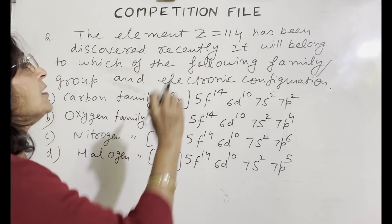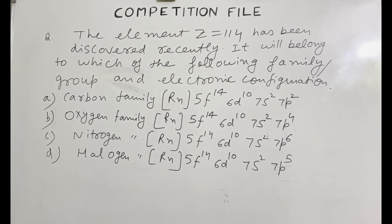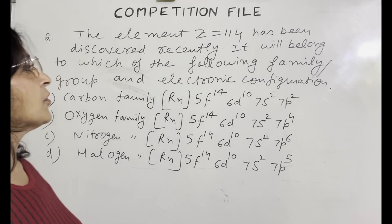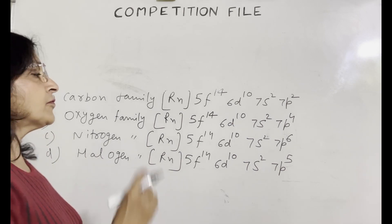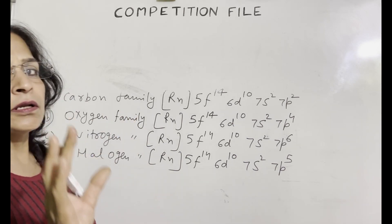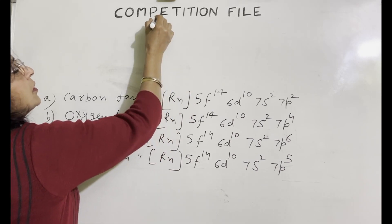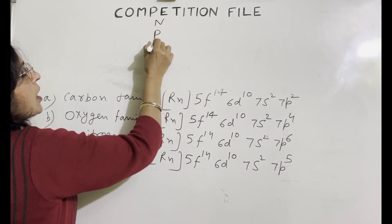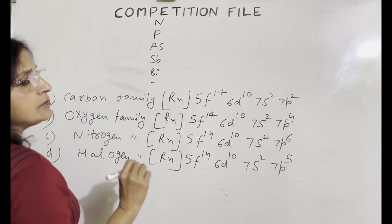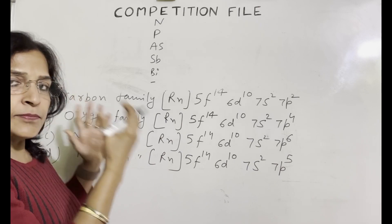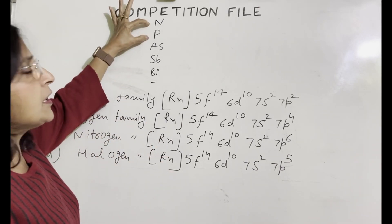Next question is the element Z equals 114 has been discovered recently. It will belong to which of the following family or group and electronic configuration. So we have 4 families given. Carbon family, oxygen family, nitrogen family and halogen family. How will we solve this question? Take any one family from the four families. Suppose we take nitrogen family.